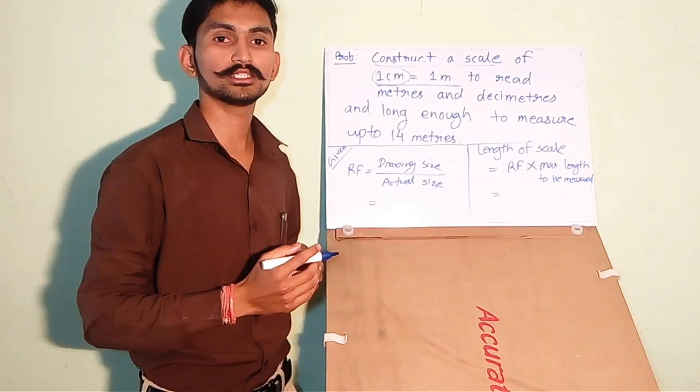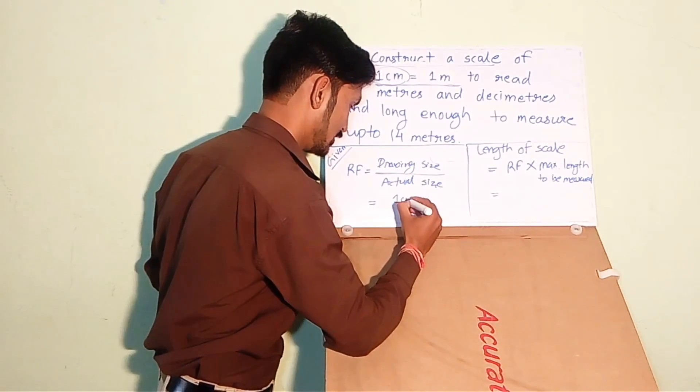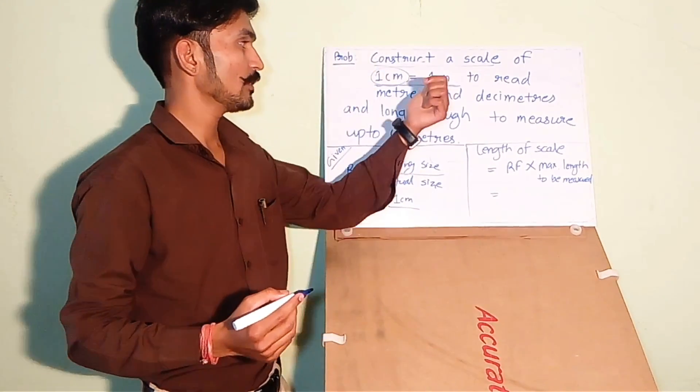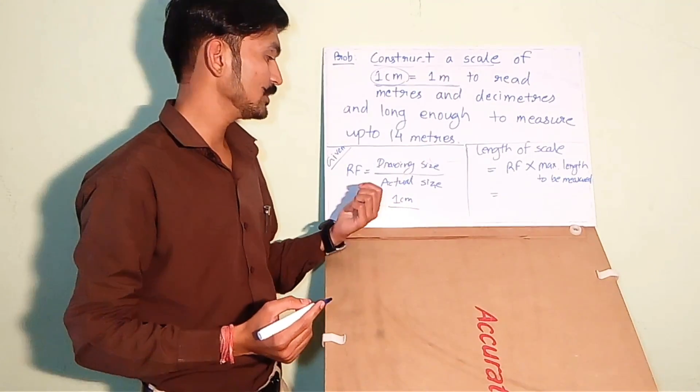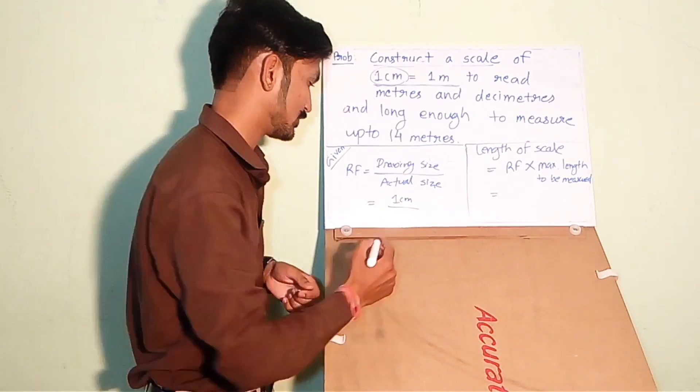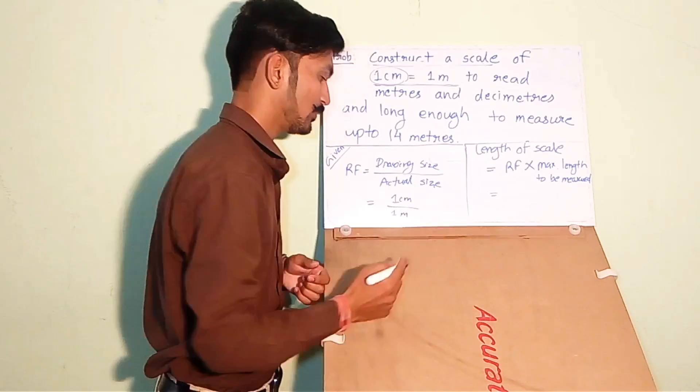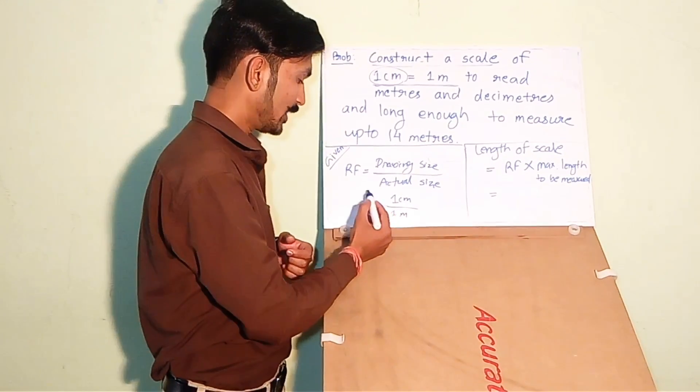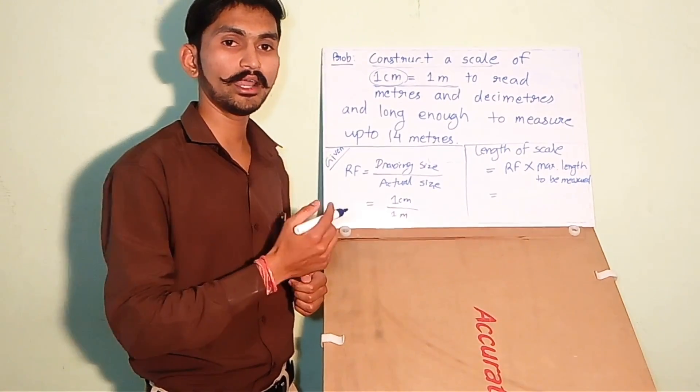1 centimeter will be the drawing size, divided by 1 meter which will be the actual size of the object. Always remember, when calculating the RF, the drawing size and actual size both should be in the same unit.